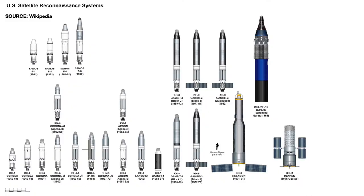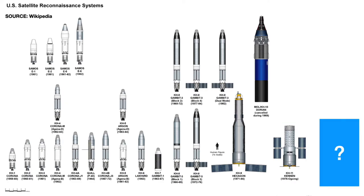From the United States, the most advanced spy satellites we know about are the KH-11s. If these look familiar, there is a reason — they look very similar to the Hubble Space Telescope, because the Hubble used technology first developed to build these spy satellites. The KH-11s were first designed back in the 70s, and certainly there are more advanced spy satellites now, but they are classified, so we don't really know what they do.